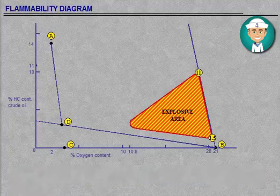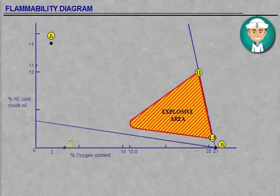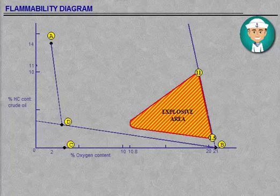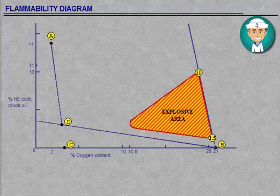Continue to measure the tank atmosphere. At point D, the inerting is to be stopped and the air venting starts. All measurements taken from now on will follow a straight line from point D to point B.